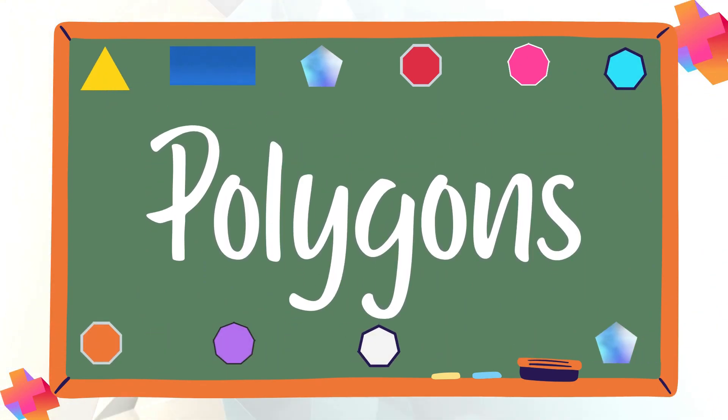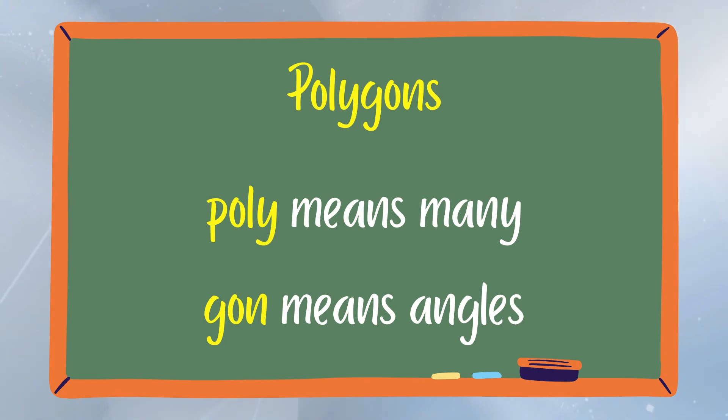Let us know more about polygons. Polygon comes from the Greek word poly means many and gon means angle. So, we can say that a polygon means a figure which consists of many angles.